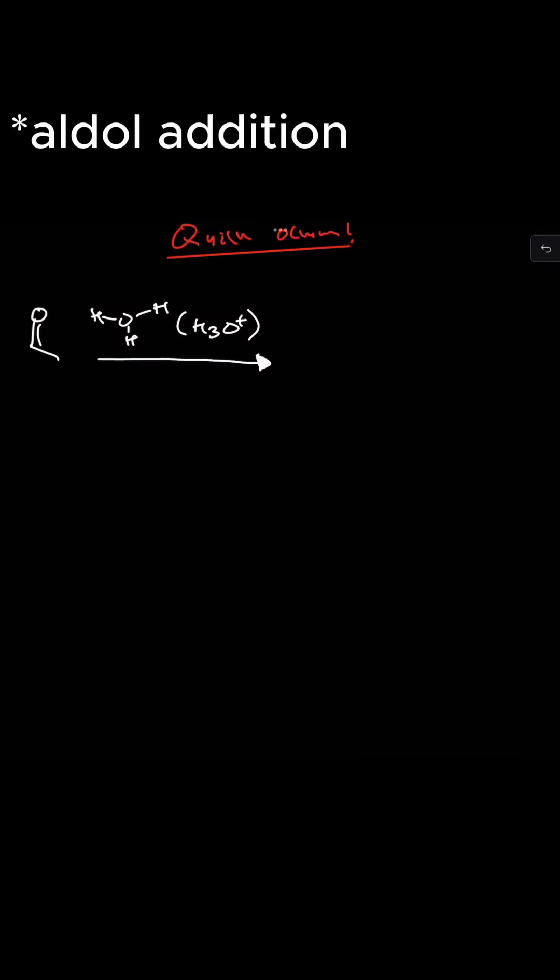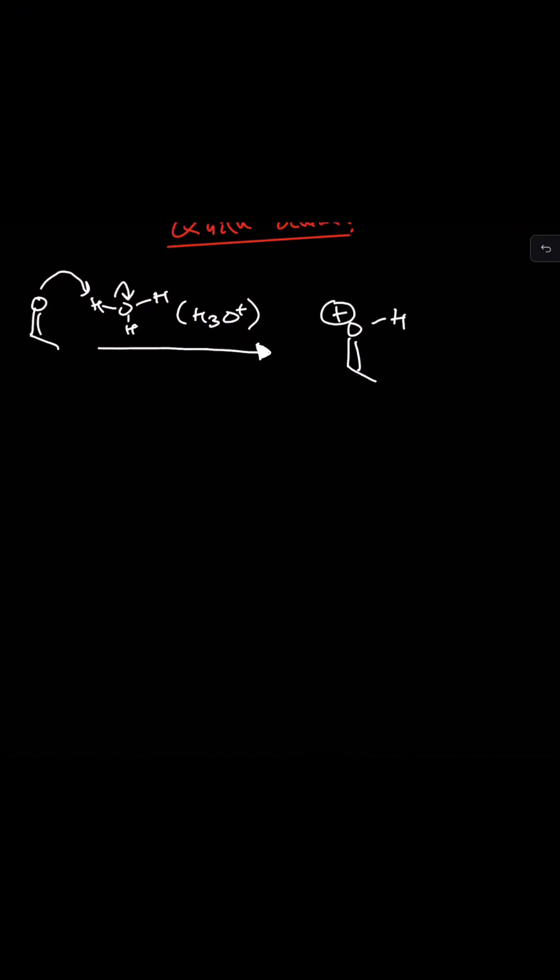addition except we're doing it under acidic conditions this time instead of basic. So what will happen first is this oxygen is going to take this hydrogen from the hydronium and that'll push these electrons back and what we'll get is this and this will put a positive formal charge on the oxygen so we have three bonds which will